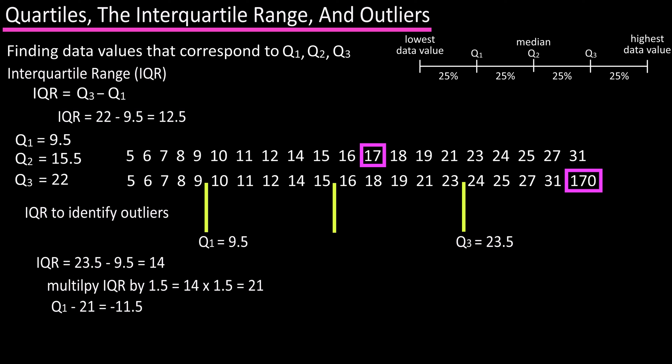Now we're going to subtract that number 21 from Q1 to get negative 11.5, and then add 21 to Q3, which is 44.5. We've now created a new range of negative 11.5 to 44.5, and any number outside of that can be considered an outlier according to this method.